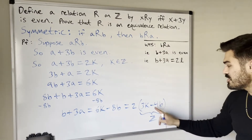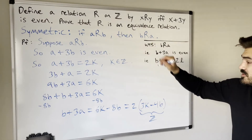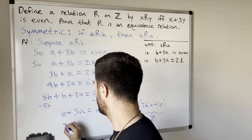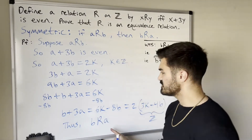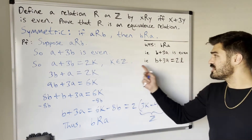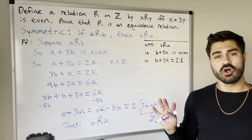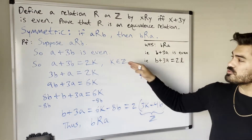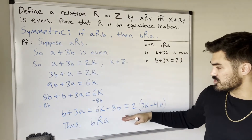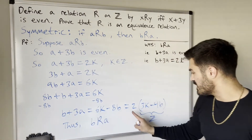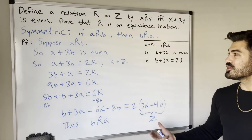Since b plus 3a equals 2 times an integer, b plus 3a is even, and therefore b is related to a. Remember: scratch work can go backwards, but in the formal proof you always move forward from your assumption toward what you want to show.